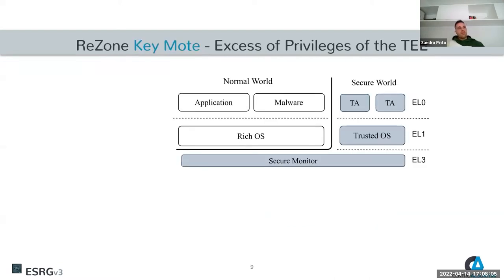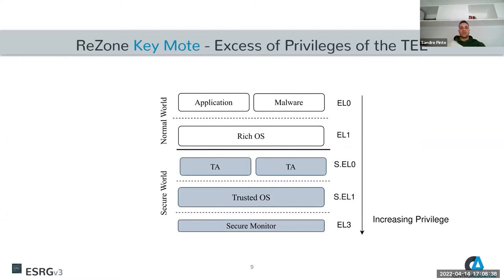The key motivation for our work is this excess of privilege of the TEE. Looking at an orthogonal view of the TrustZone architecture, the trusted OS can access the normal world and other components in the system. Representing the architecture vertically is more intuitive: the secure world is more privileged than the normal world, so all components — trusted OS and secure monitor — can access layers sitting below. Since there is no real isolation between EL3 and secure EL1, the trusted OS effectively has similar privileges to the secure monitor.